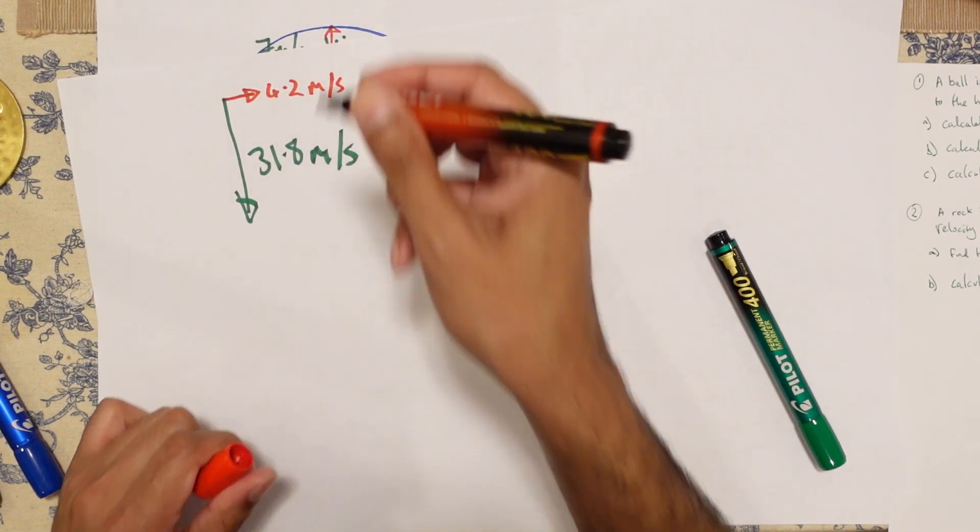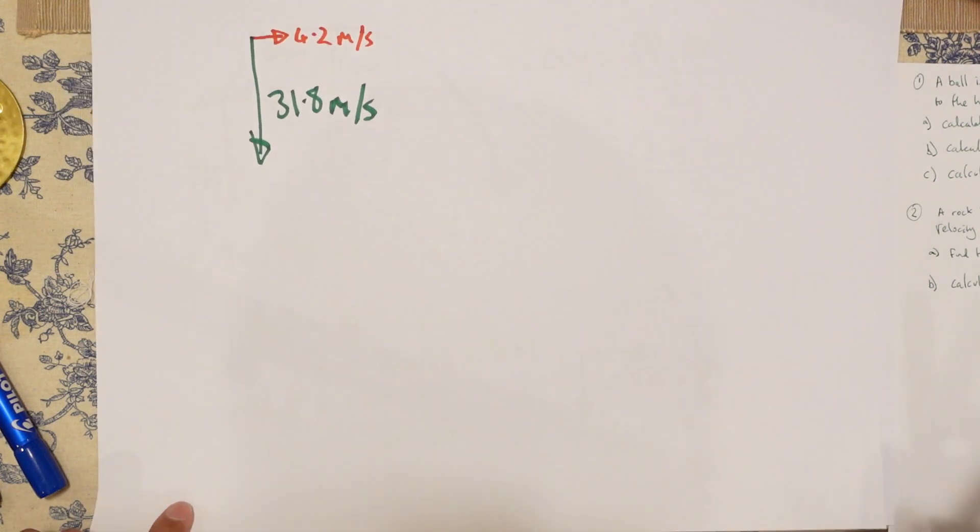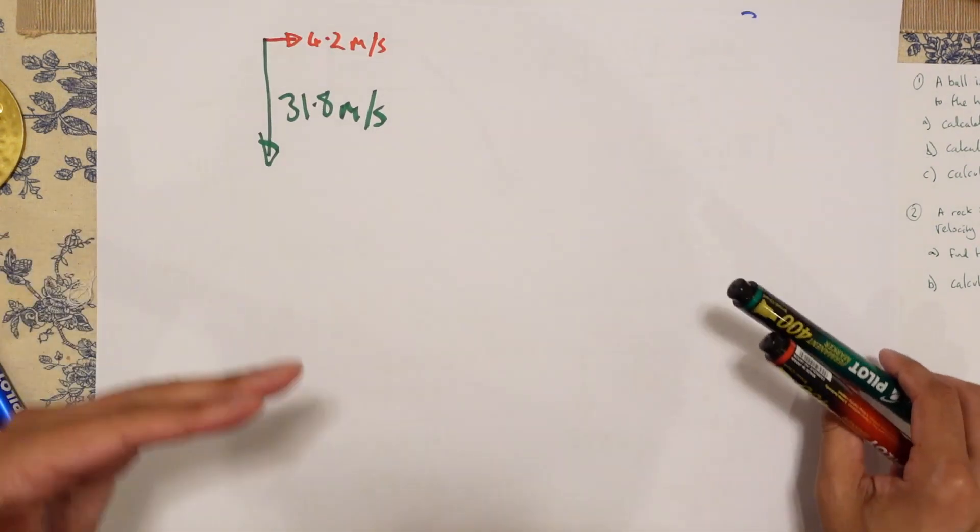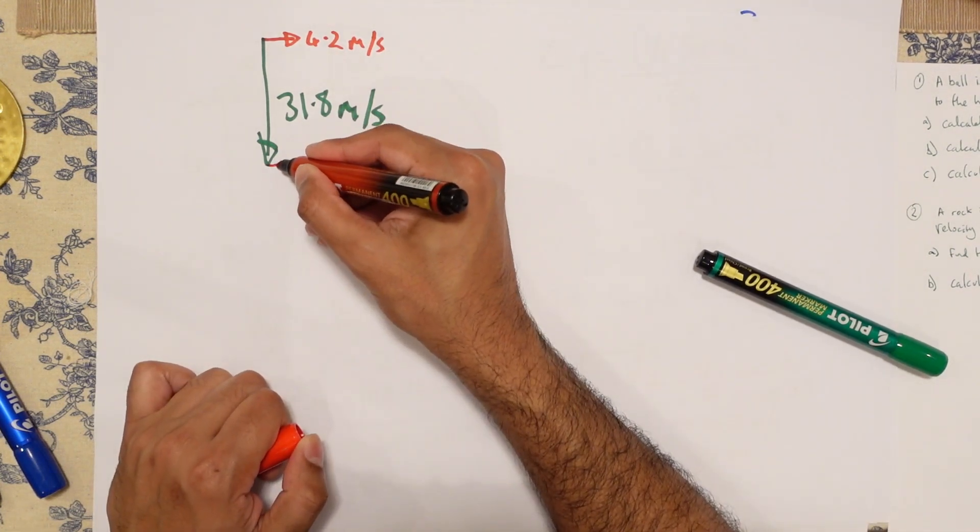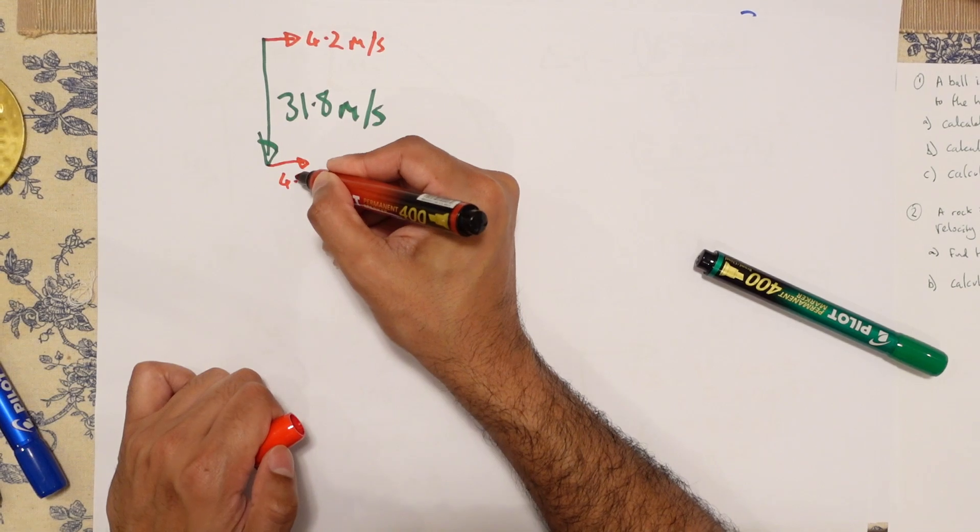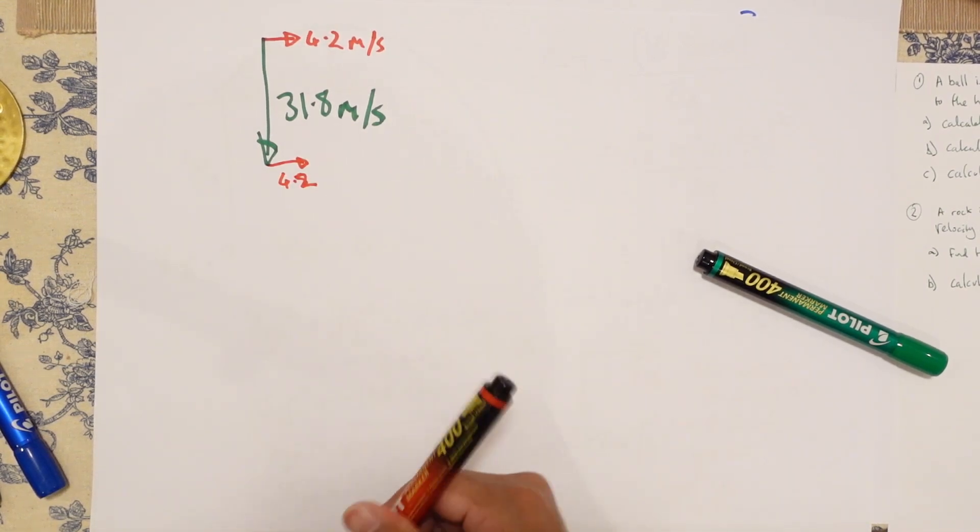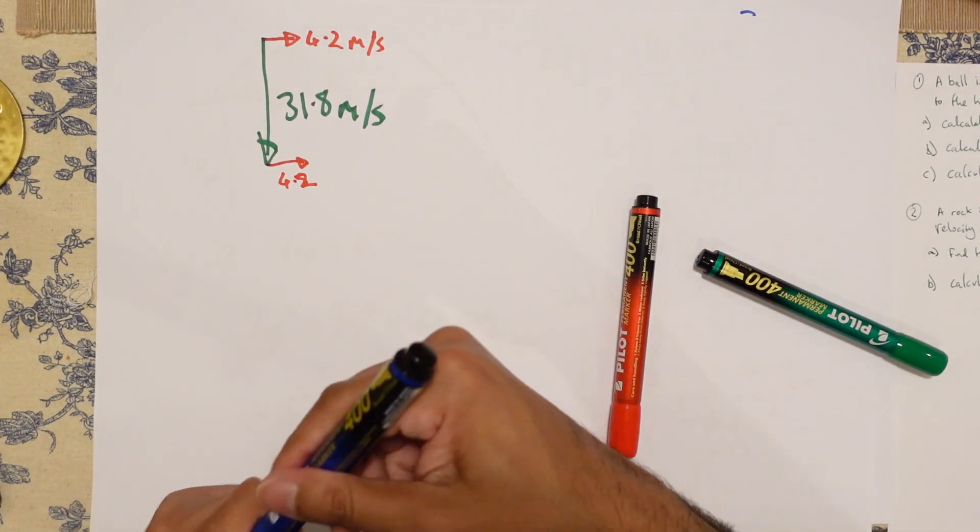Now, if you remember anything about adding vectors together, you always put them head to tail. So technically, I can just add it over here like so. This is your 4.2. Like this. And then my resultant is going to be like that.